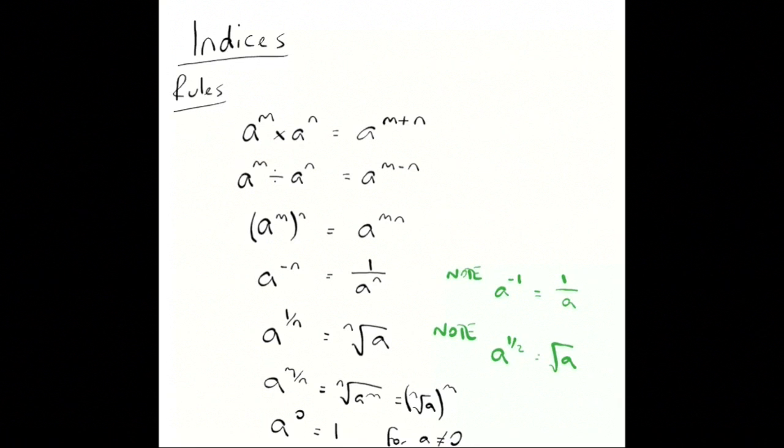So, there are basic rules. What we're going to do is, we're going to look at them in an example. If we simplify y to the three times y to the two, y cubed times y squared, we can add the powers, we get y to the five.